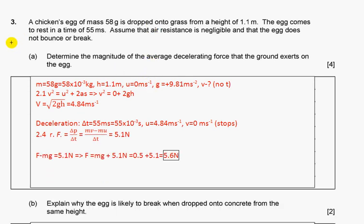Question three: A chicken's egg of mass is dropped onto grass from a height. The egg comes to rest in a time. Assumes air resistance is negligible and the egg doesn't bounce or break. Determine the magnitude of average decelerating force that the ground exerts on the egg. First of all, at which speed does it strike the ground?